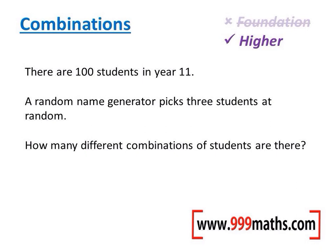For this question you just need to remember the multiplication rule. If there are 100 students in the year group and the random name generator is going to pick 3 students, in terms of how many combinations there could be, well to begin with there are 100 students.